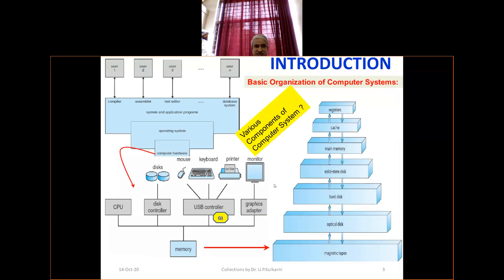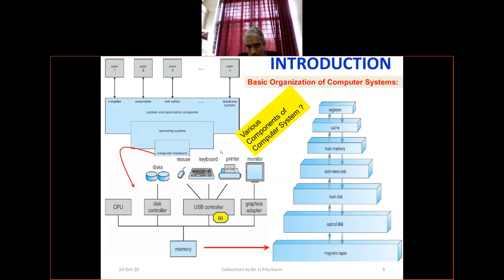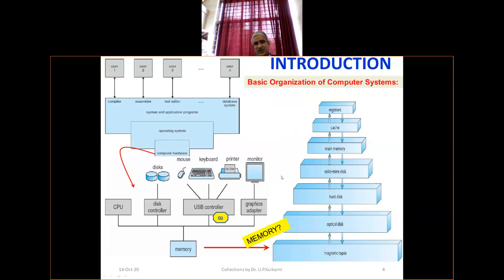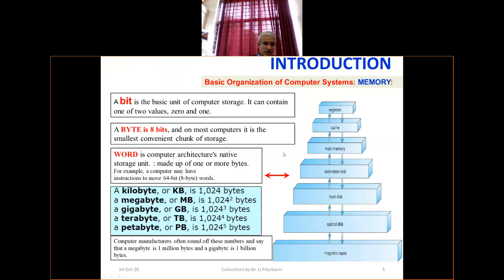We have seen the various components of a computer system. Particularly, you can see this as layers — underlying hardware, then the operating system on top of that, then system and application programs like compilers, assemblers, and text editors. We have also focused on memory and its hierarchy: registers, cache memory, main memory, solid-state disk, hard disk, optical disk, and magnetic tapes. I'm just reminding you what we have covered — not covering it fresh again.